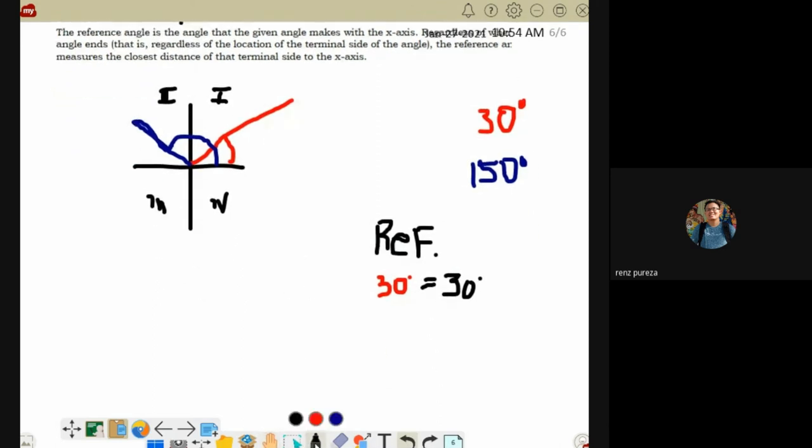Next, how about for the 150? The reference angle for 150 is also 30. How did that happen? Because we said you're going to treat the x-axis as the initial side. Initial side. This is your terminal side. Therefore, it's also 30. There's 30 degrees before reaching the x-axis.